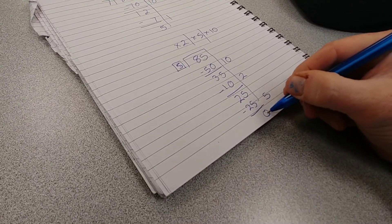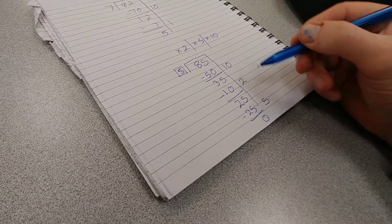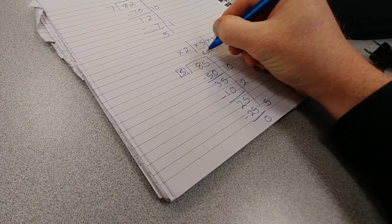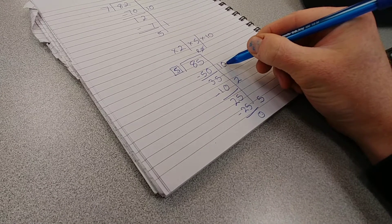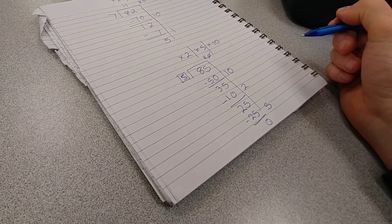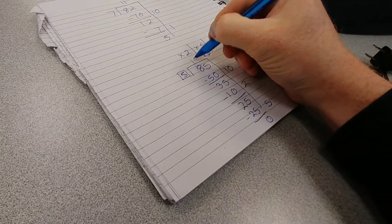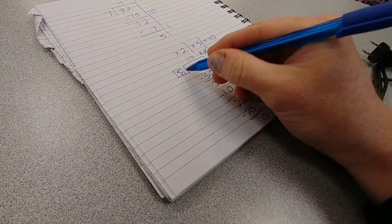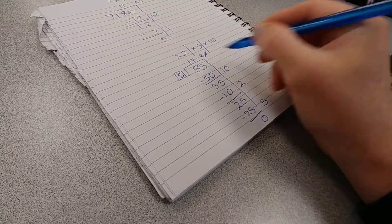Is there a remainder? No, remainder is zero. What is ten plus two plus five? Boom, you did it. Five times seventeen is 85, there's no remainder.